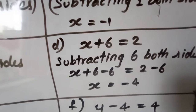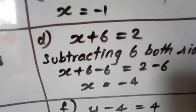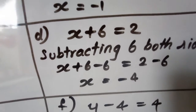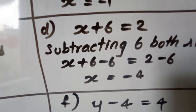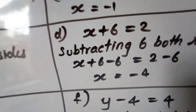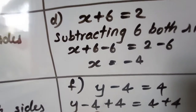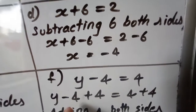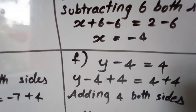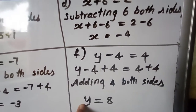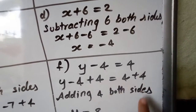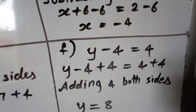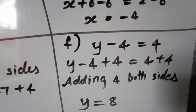Question F: y minus 4 is equal to 4. Adding 4 to both sides — this will separate the variable y. y minus 4 plus 4: the minus 4 and plus 4 cancel to 0, leaving only y. On the right side, 4 plus 4 gives 8. So y is equal to 8; the value of the variable is 8.